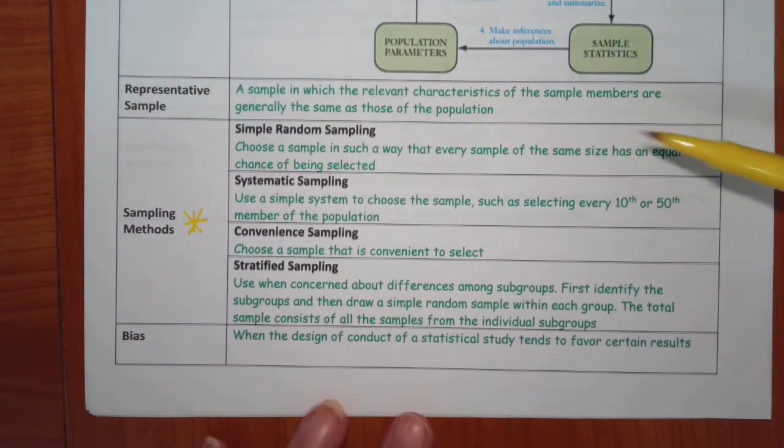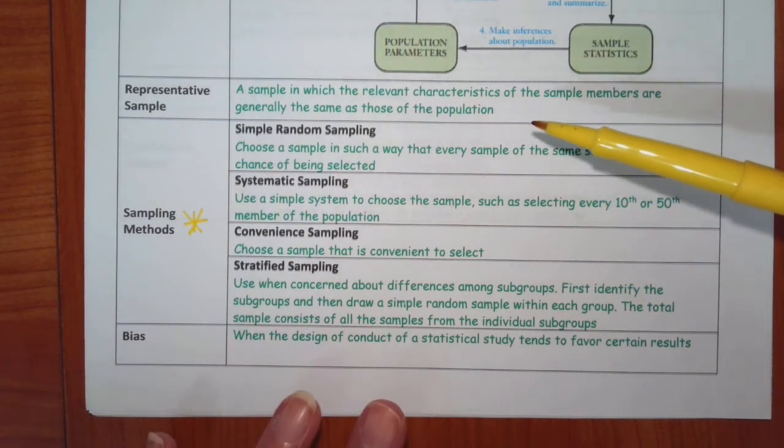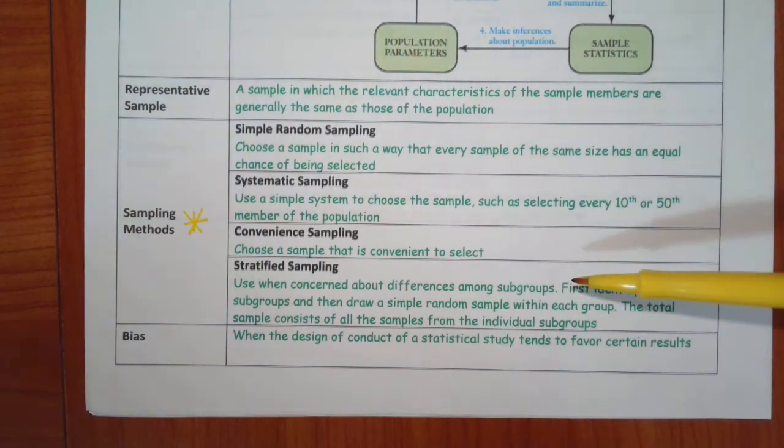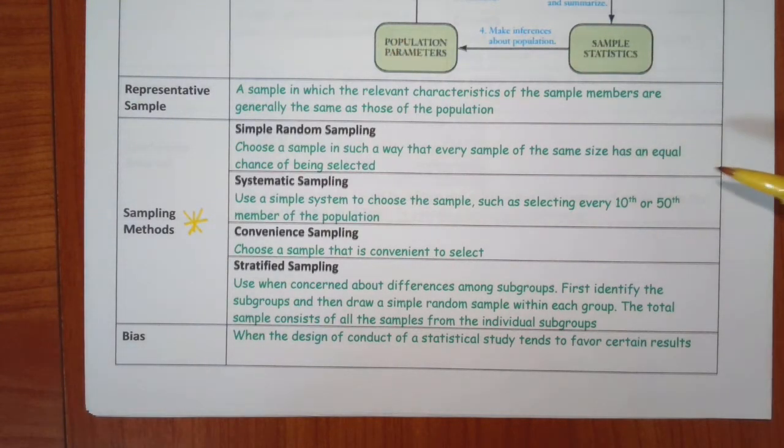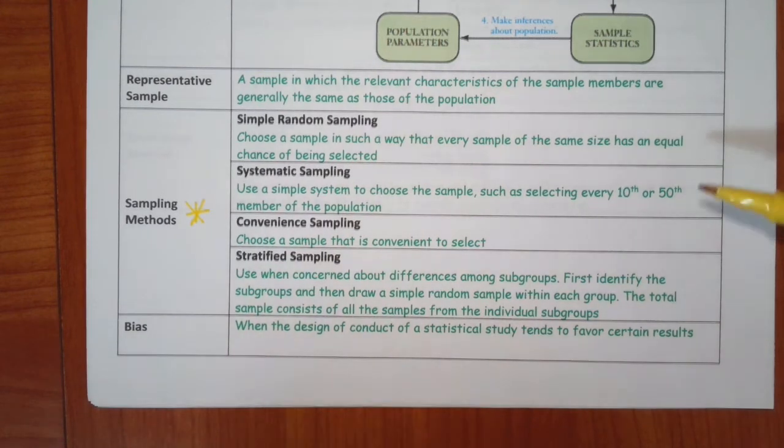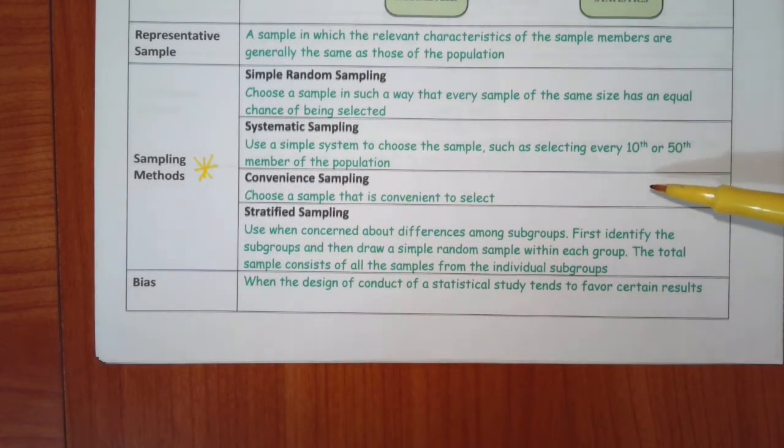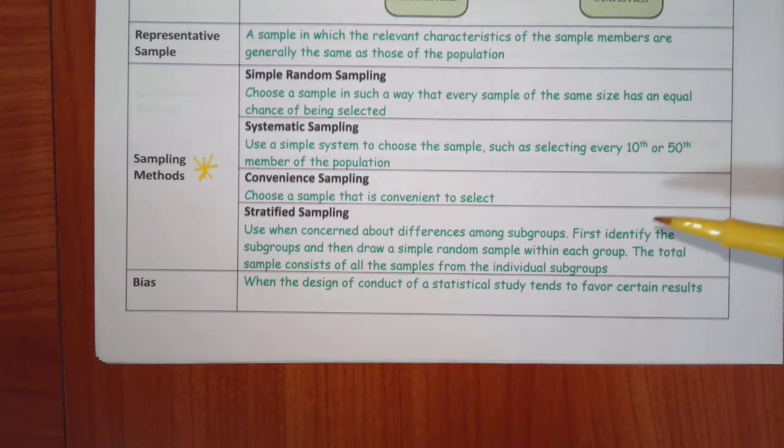Here are some methods of sampling. And again, you need to be able to provide an example of each of these or identify from an example which one it is. Simple random sampling is choosing a sample in such a way that every sample of the same size has an equal chance of being selected. Systematic is when you use some kind of simple system. You pick every fifth person name on a list, or you pick everyone with red hair, or sitting in the fourth row in the classroom, or whatever. Convenience sampling is the easy one. You choose one that's convenient. You don't take into consideration whether or not it will be representative or anything else. Just what's easiest.